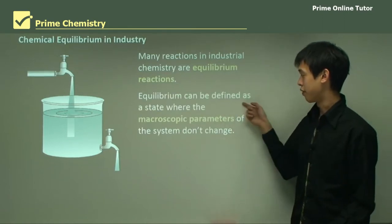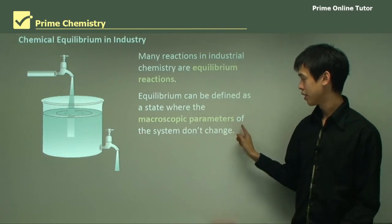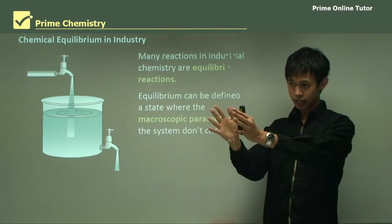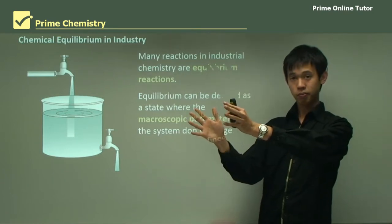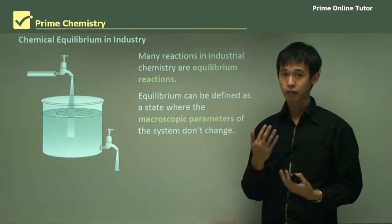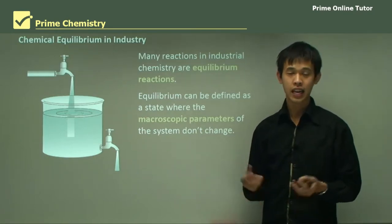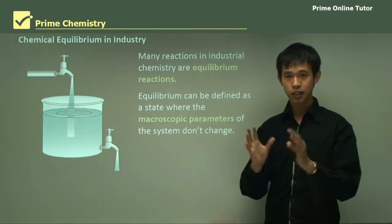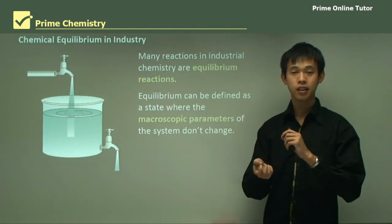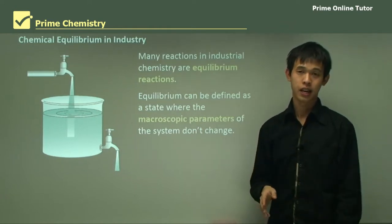Equilibrium can be defined as a state where the macroscopic parameters of the system don't change. What that means is that if I look at the system at chemical equilibrium, I won't see any changes happening in front of my eyes — no color change, no heat or light being emitted. Everything stays the same. The molecules might still be moving on the inside, but from the outside I won't be able to see that.